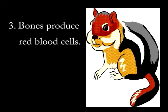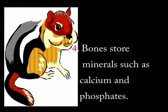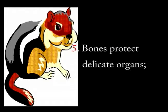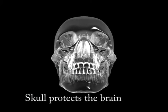Third, bones produce red blood cells. Fourth, bones store minerals such as calcium and phosphates. Fifth, bones protect delicate organs. For instance, the skull protects the brain.